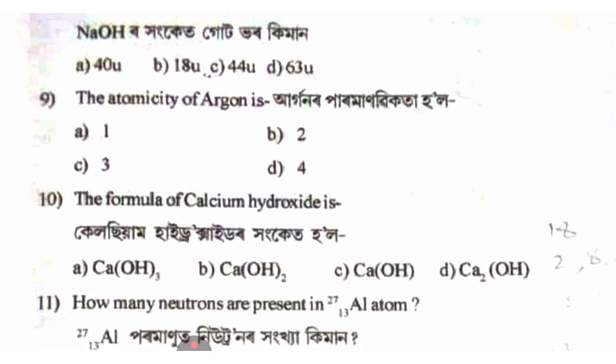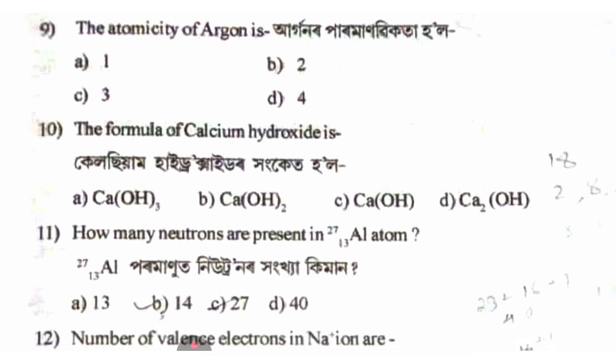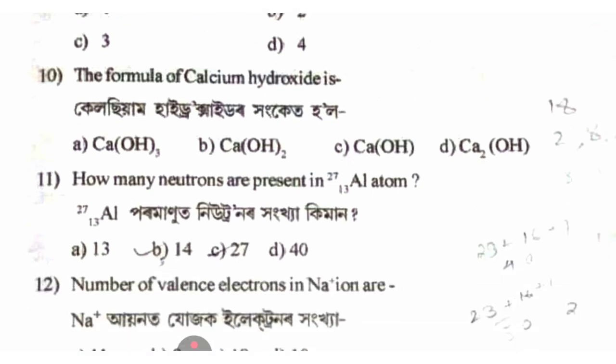The formula of calcium hydroxide is Ca(OH)₂, option B. How many neutrons are present in the 27/13 aluminum atom?